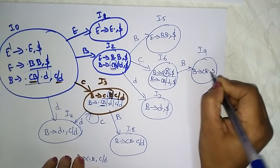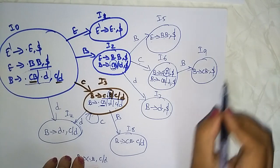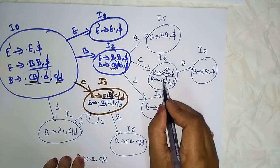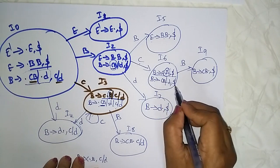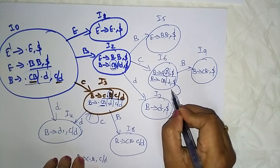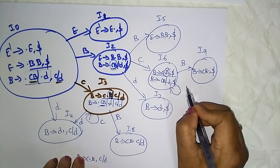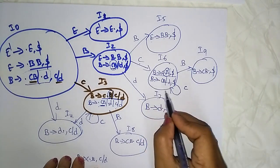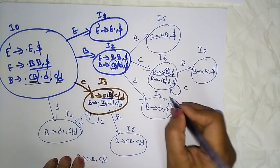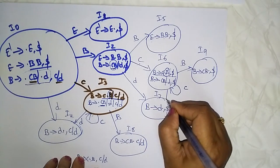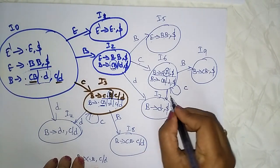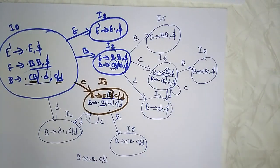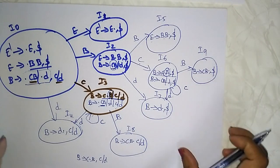In I9, after the dot nothing is there. On 'c', you get C · B with dollar — this repeats, so write it as small 'c'. For 'd', B → D · with dollar lookahead is already present. This completes the CLR(1) data flow diagram.